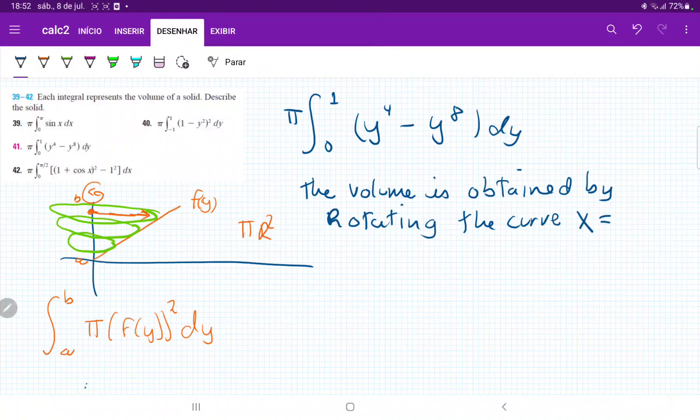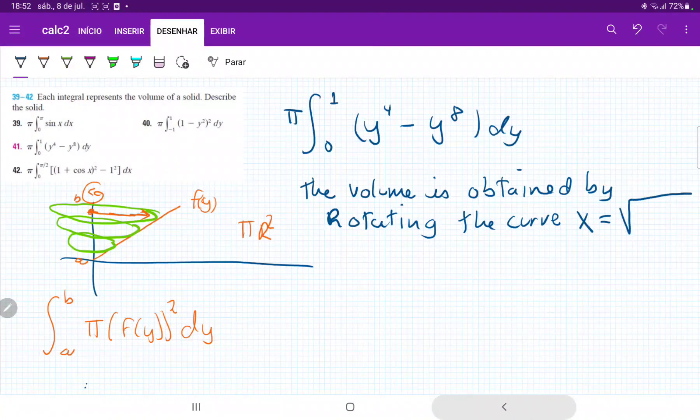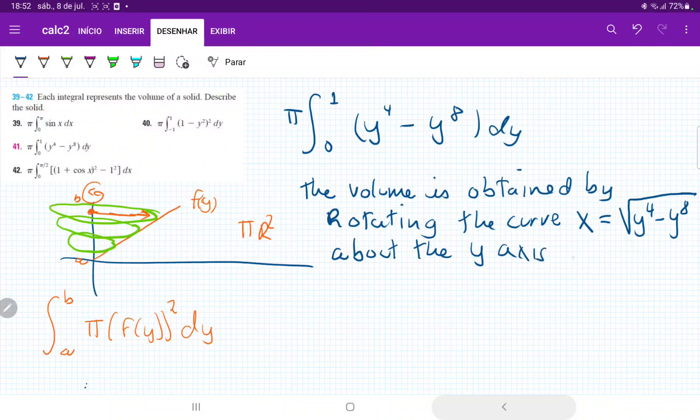Notice that it's f(y) squared. So in this case, our curve is actually the root. So it's going to be square root of y⁴ minus y⁸, because then when we square it, we just get the regular thing with no exponent, by rotating the curve about the y-axis from 0 to 1.